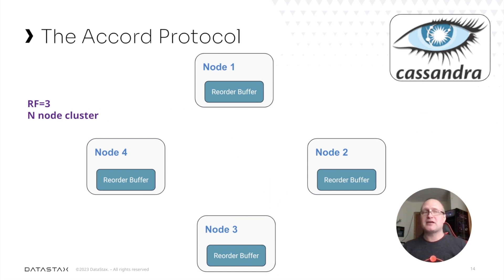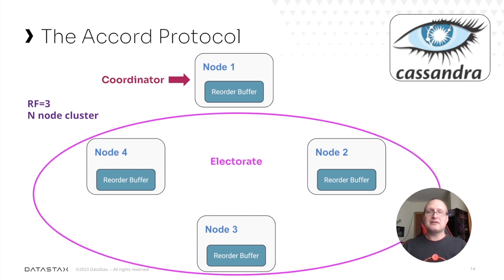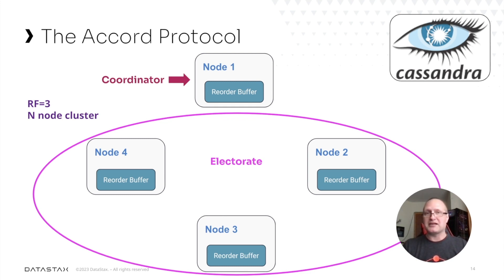Let's assume we have a cluster with a replication factor of three — an N-node cluster, maybe six nodes, maybe twelve, maybe 120 — regardless. Essentially, one node will function as a coordinator, just like in almost every other Cassandra operation. Then there will also be additional nodes which will be part of the electorate — the nodes that will vote and decide whether or not this transaction is legitimate and can be completed.